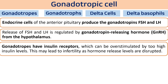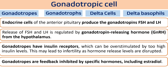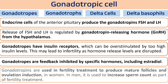High insulin levels may lead to infertility as hormone release levels are disrupted. Gonadotrops are also regulated through feedback inhibition by estradiol or estrogen. Estrogen produced by the ovary negatively regulates — that is, feedback inhibits — the release of FSH and LH.